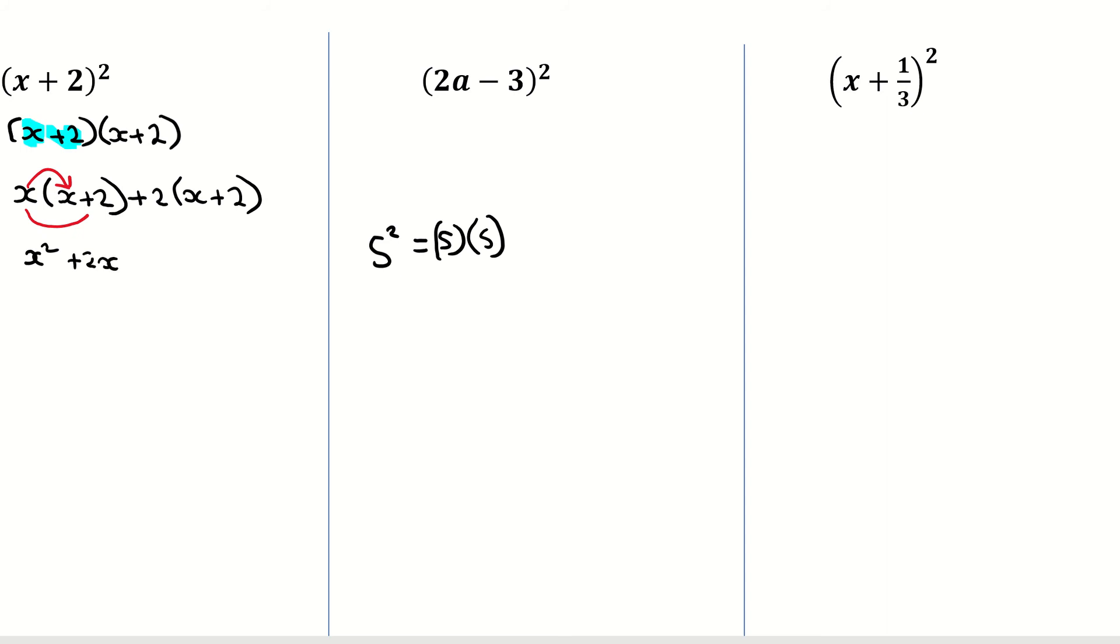I then multiply in my second bracket, which is 2 multiplied by x, which is plus positive 2x once again. And then I multiply my 2 by 2, which is positive 4. I'm then going to group the 2x and the 2x together. The like terms I'm going to add together, which is giving me 4x. So my final answer there is x squared plus 4x plus 4.